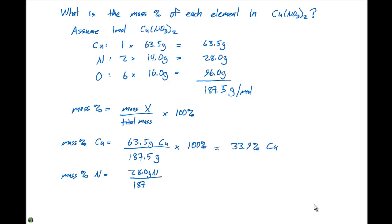This gives us 33.9% copper. The mass percent of nitrogen is gonna equal 28.0 grams of nitrogen divided by the total mass, which is again 187.5. We multiply by 100%, and that gives us 14.9% nitrogen.